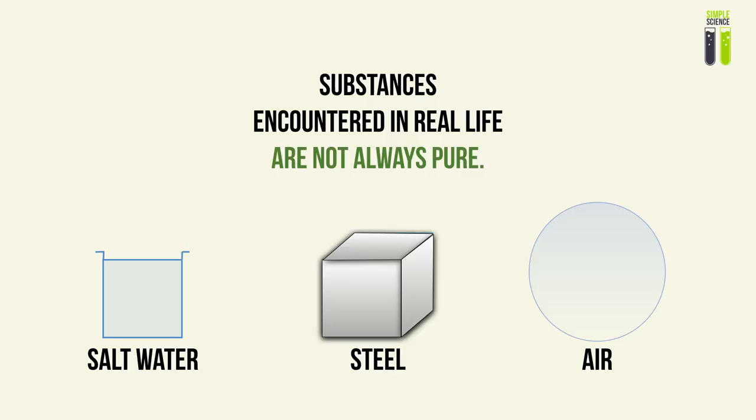In our daily lives, we encounter substances that are not always pure. Most substances that we encounter are in fact impure — they are adulterated, but for good reason, or in nature they exist that way. Examples include salt water, which is a mixture of salt and water; steel, which is a mixture of carbon and other elements within an iron structure; and air, which is a mixture of gases.